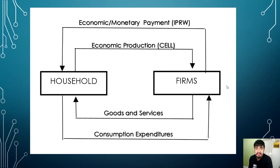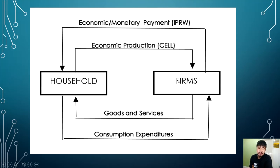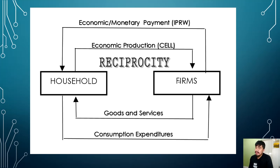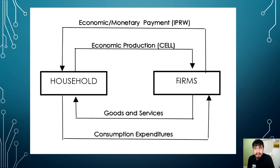Firms have the technology to convert raw materials. So the household will now give its economic production — its raw materials — to your firms, enabling them to convert the raw materials into final products or something consumable. But please take note: in economics, there is what we call reciprocity, which means give and take. For instance, if you buy candy, you need to pay. That is reciprocity — it is natural in human behavior. So the household gives economic production, and in return, the firms will pay your household — what we call economic payment or monetary payment.